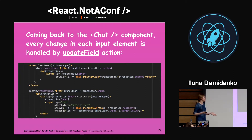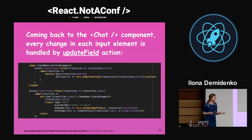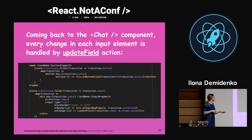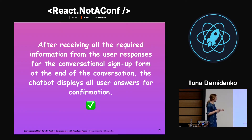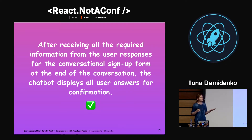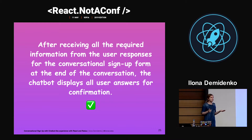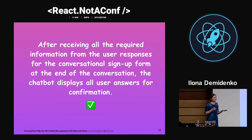Now we have two ways to collect data from the user. The first is an on-click button, where the user selects the offered answer from the chatbot. The second way is the user entering data that the chatbot asks them to provide. After receiving all the data, it's time to preview all the data for the user, so they can see what they have entered. If they agree, they will proceed to sign-up.